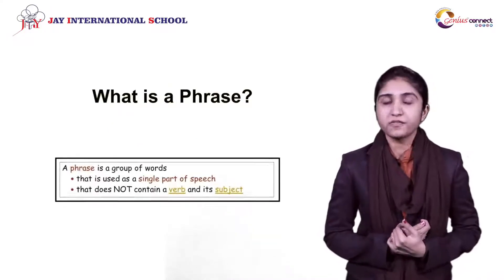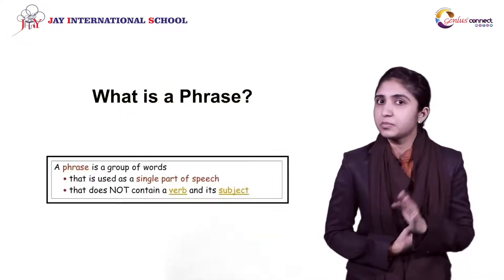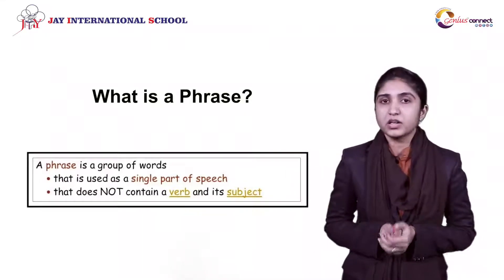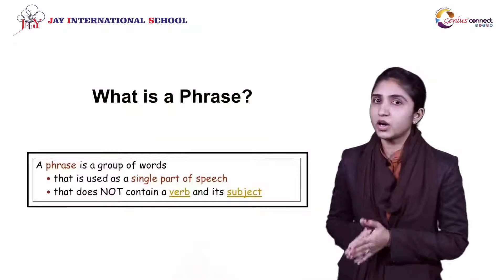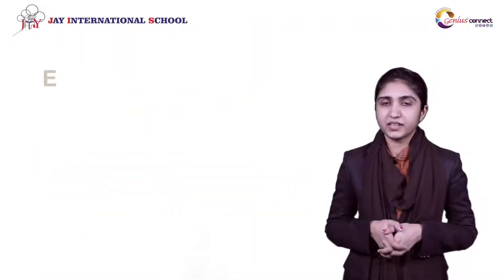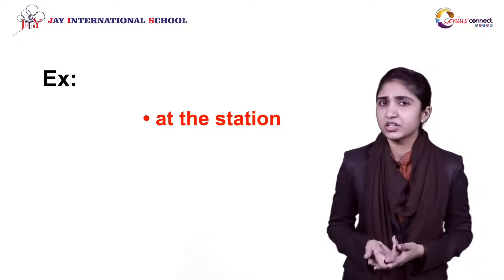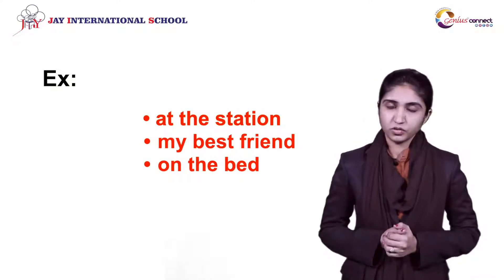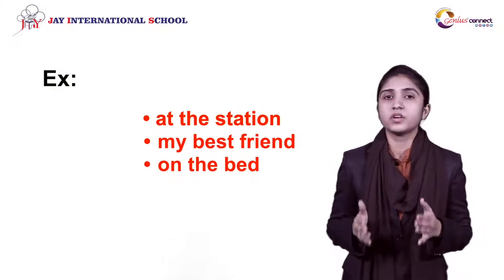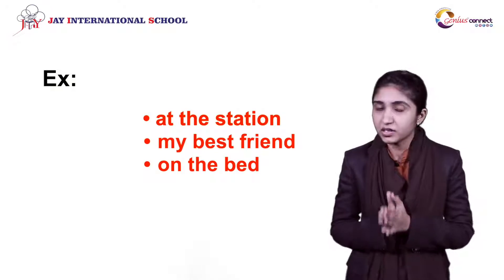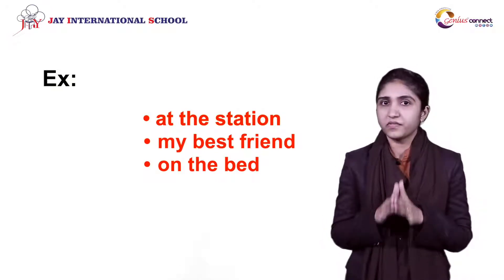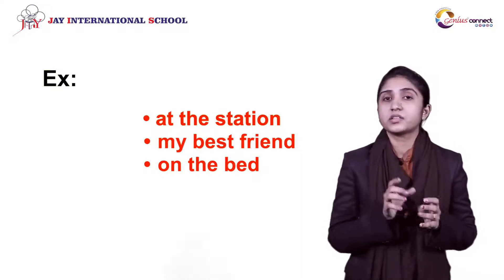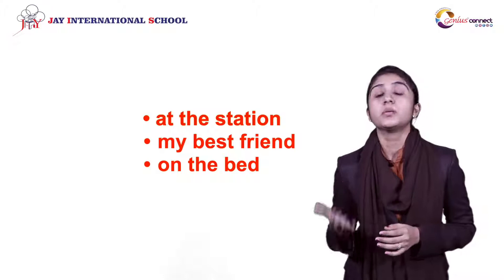A phrase is a group of words without a complete meaning. There is no subject or verb in the words — it is a group of words without a subject and a specific verb. For example: at the station, my best friend, or on the bed. There is no subject or verb, meaning no action happening in the group of words, so a phrase cannot complete a sentence. It is just a unit of a sentence without a complete meaning.